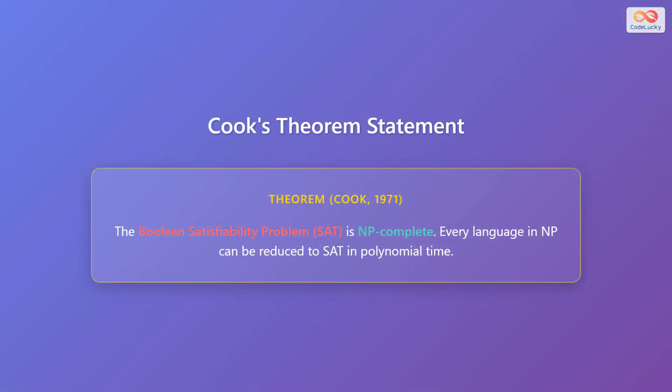Here is the formal statement of Cook's theorem. The theorem, published by Stephen Cook in 1971, states that the Boolean Satisfiability problem — that is, SAT — is NP-complete. More formally, every language in NP can be reduced to SAT in polynomial time. This was the first problem ever to be proven NP-complete, and it has profound implications for the field of computer science.